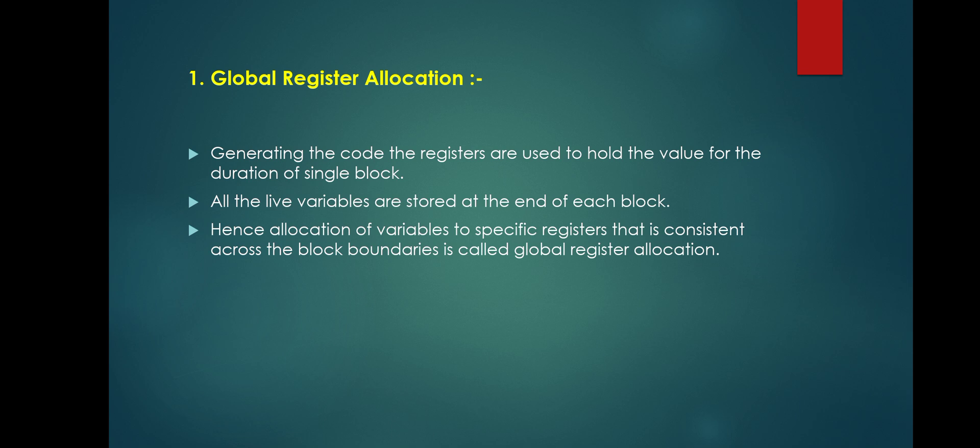In global register allocation, live variables are stored at the end of each block — store and load operations are performed. The register will be consistent across block boundaries, which is why it is known as global register allocation: even across blocks, we can access that register and it remains consistent for all blocks.